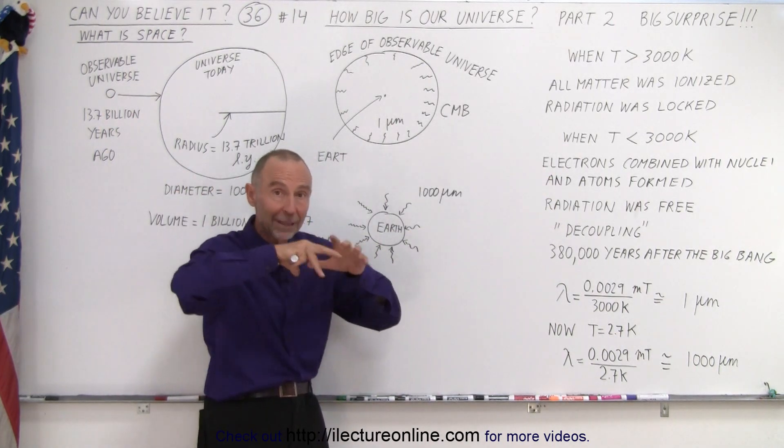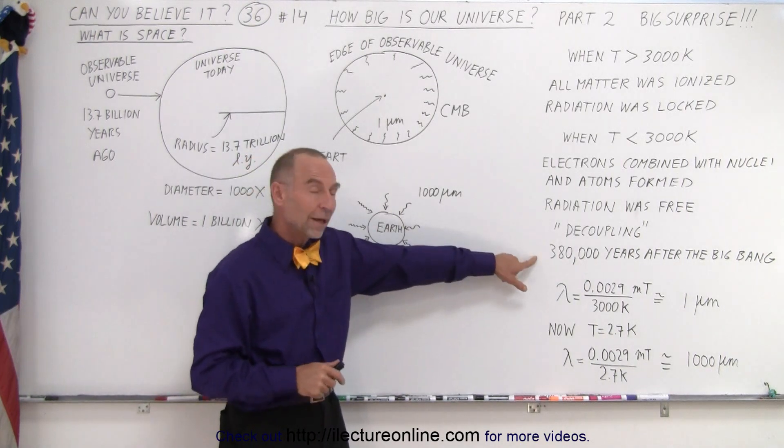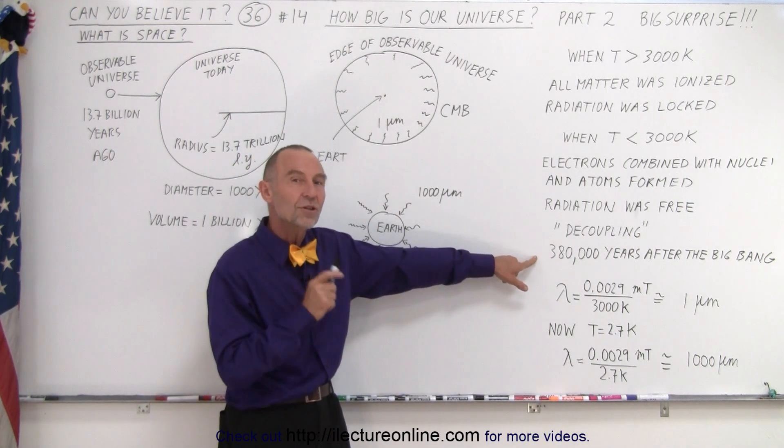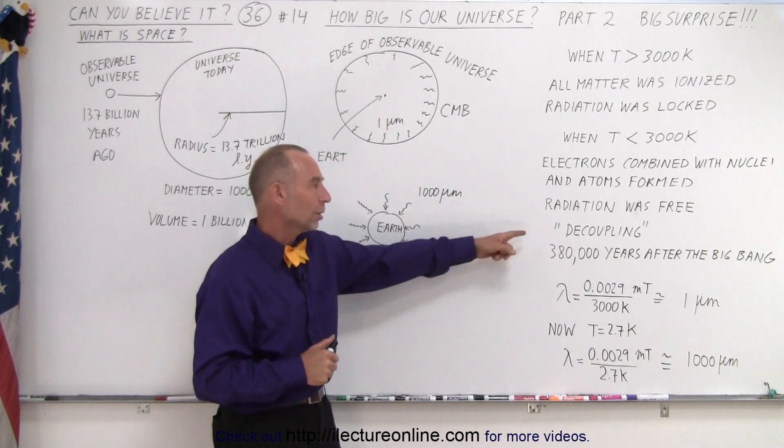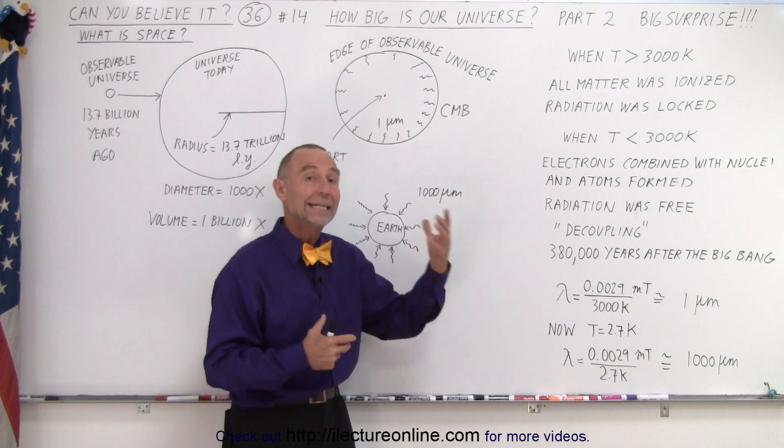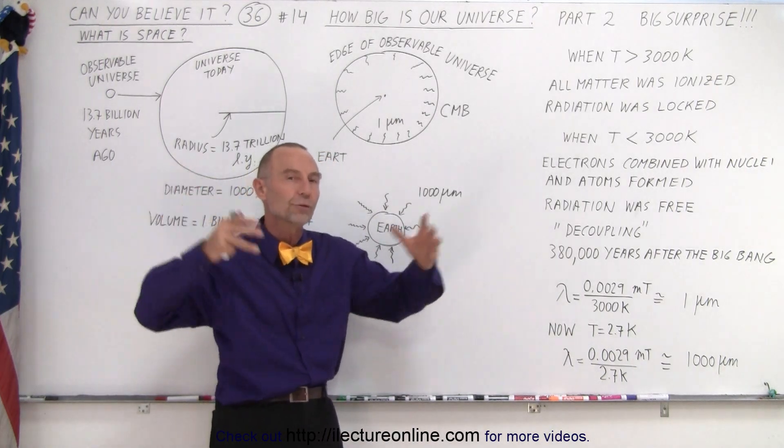That radiation that had been locked up until then, we estimate that was about 380,000 years after the big bang. After the beginning of the big bang. We call that event the decoupling where radiation was decoupled from matter and now radiation was free to roam through the universe.